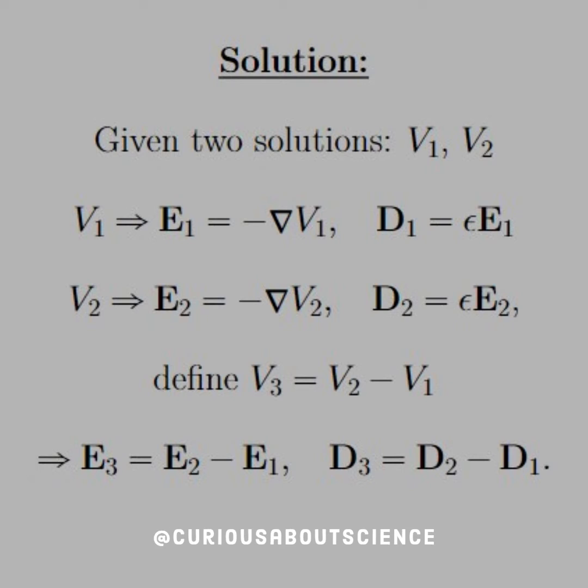Alright, to start this off, let's consider that we're given two solutions, V1 and V2. If we have these potentials V1 and V2, then that would imply that we have the fields because we have the negative gradient of those potentials. If we have the fields, we know we have the electric displacements because D equals epsilon E.